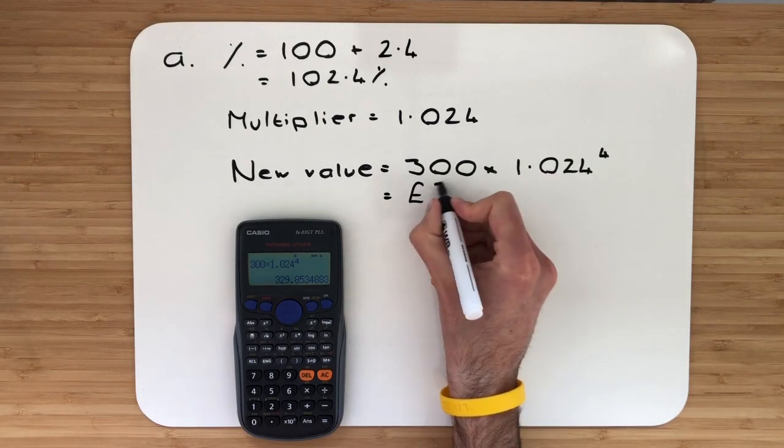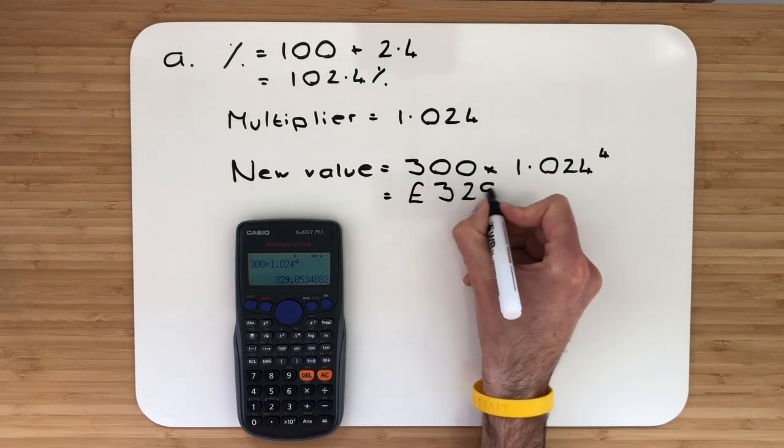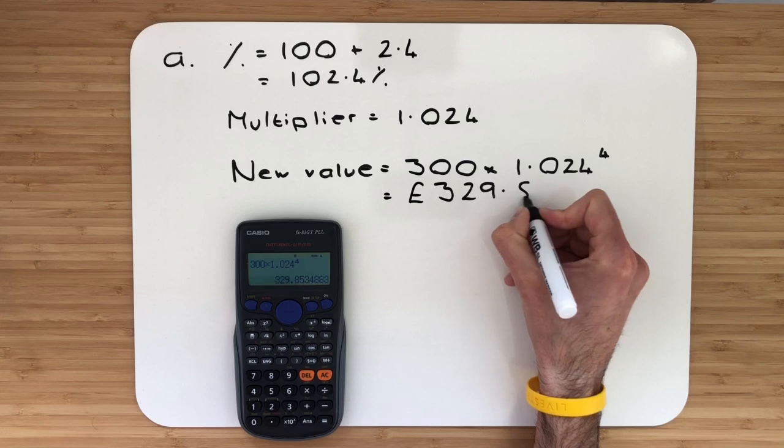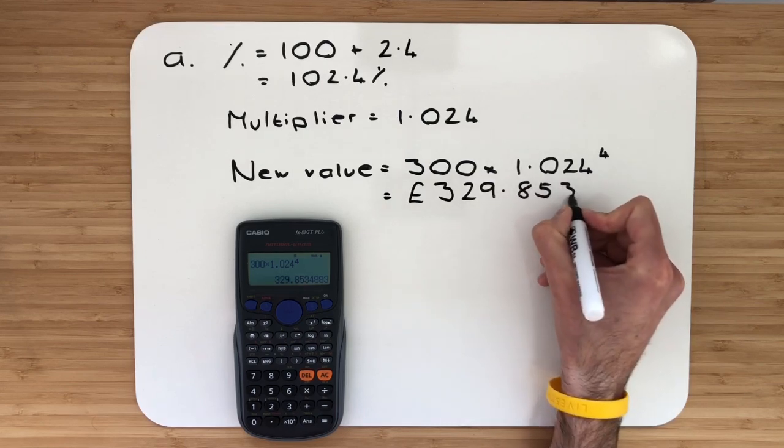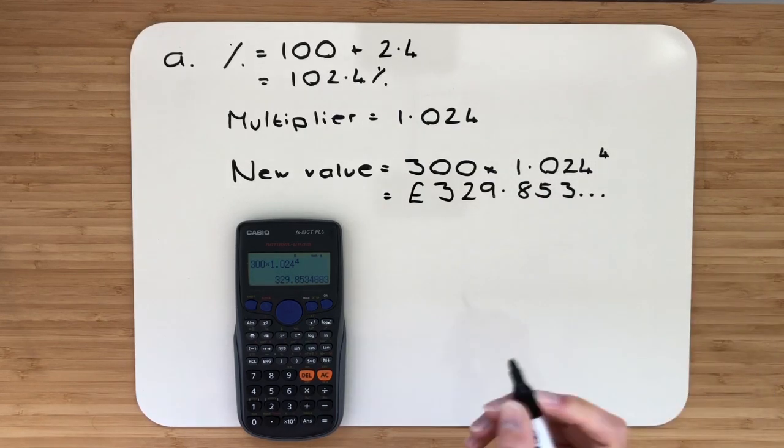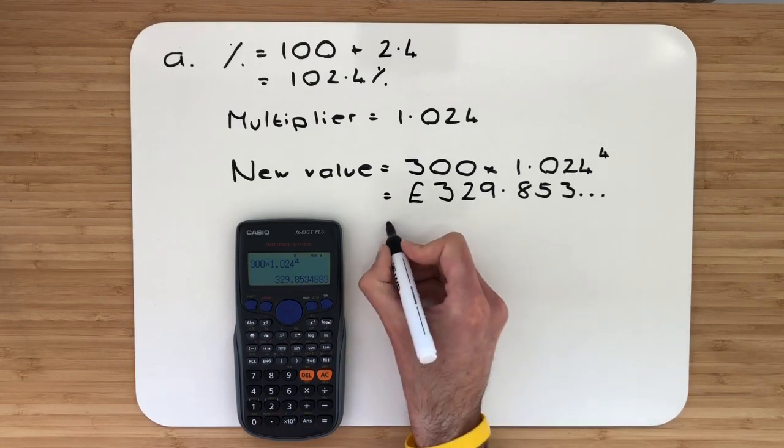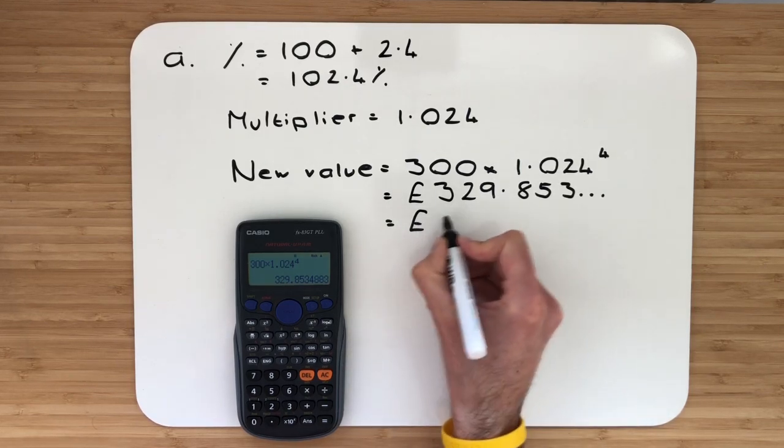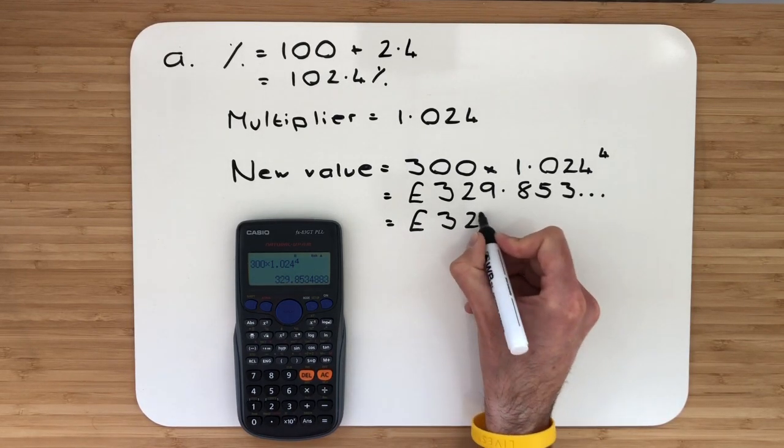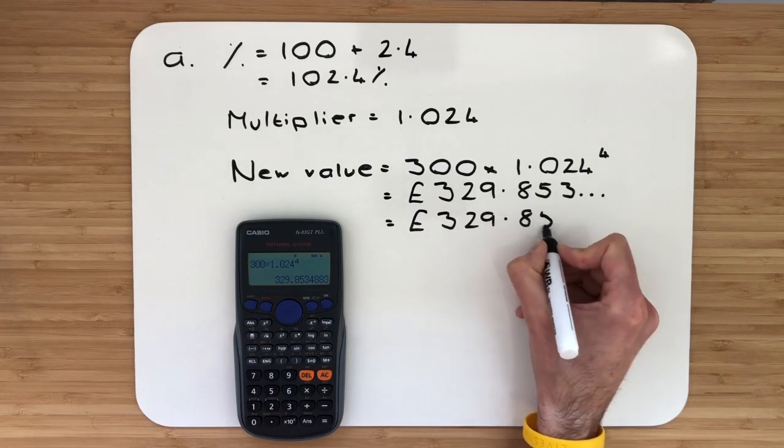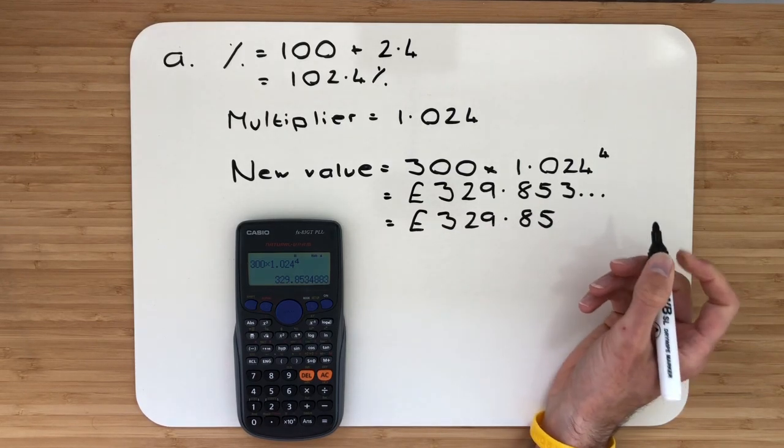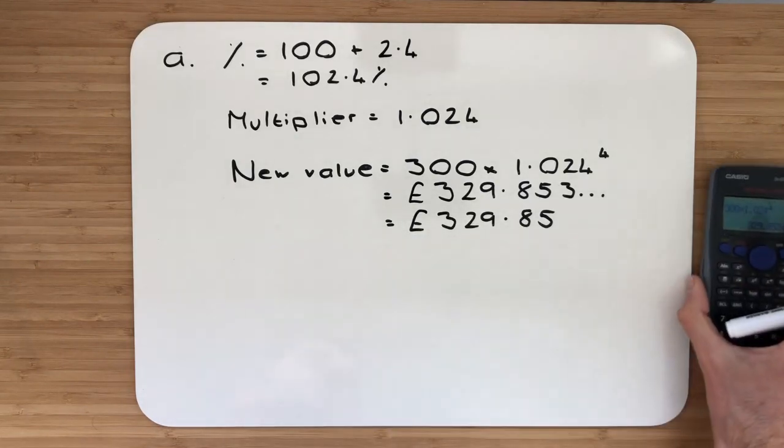That will give me £329.853... it just keeps on going. Because this is money, we always have to round to two decimal places. So we have £329.85. That's the bit we should be familiar with.